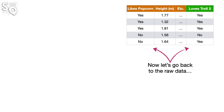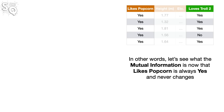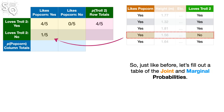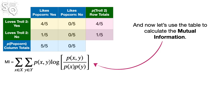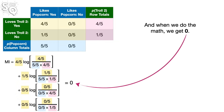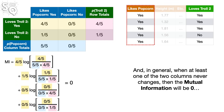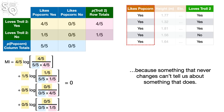Now let's go back to the raw data and see what happens when we change it so that likes popcorn is always yes — it never changes. When we fill out the table and calculate the mutual information, we get 0. In other words, when likes popcorn never changes, it can't tell us anything about what's happening in loves Troll 2. In general, when at least one of the two columns never changes, the mutual information will be 0, because something that never changes can't tell us about something that does.